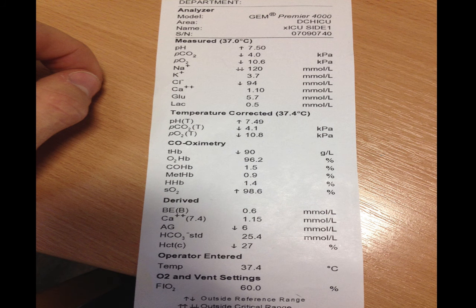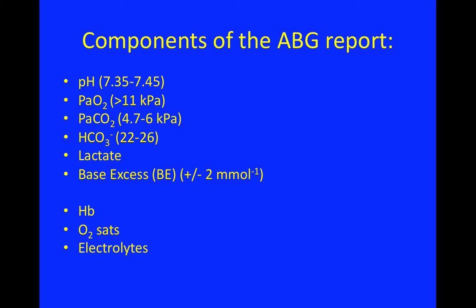Moving on to the components of the ABG report — when it prints out from the machine, as you can see in the example here, you get a plethora of different results, and it's important to know what these are. Starting at the top: the pH is a reflection of the level of acidaemia or alkalosis within the blood. It's a logarithmic expression of the hydrogen ion concentration. The normal range is 7.35 to 7.45.